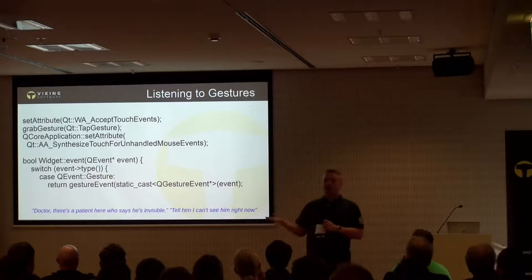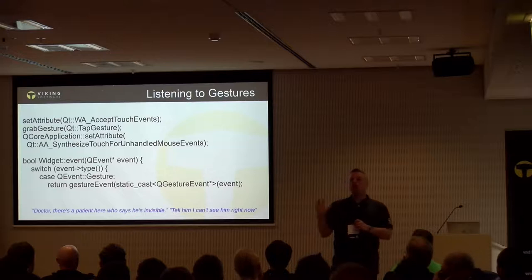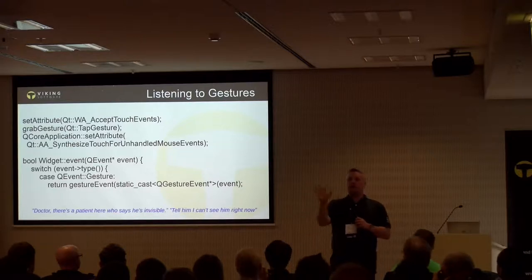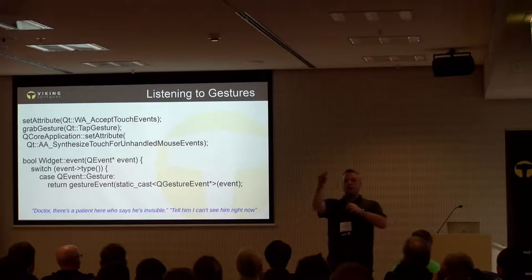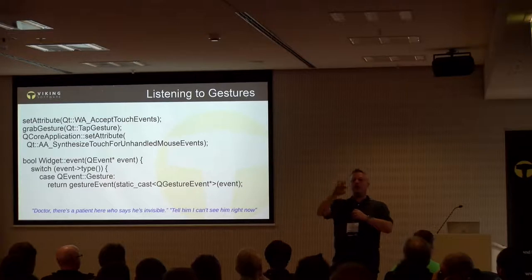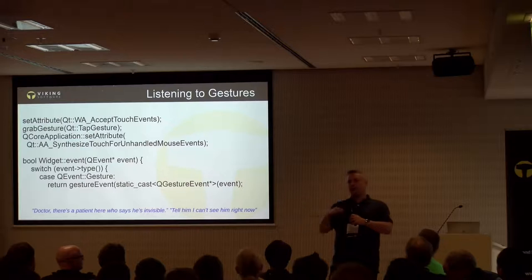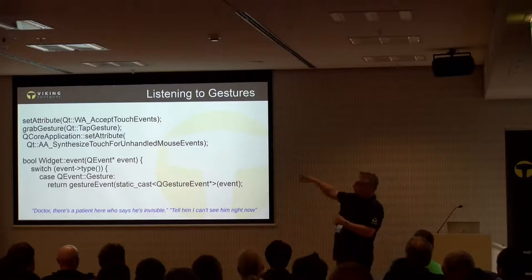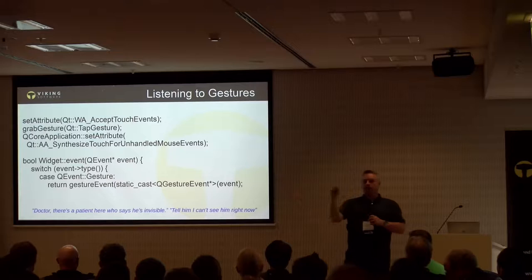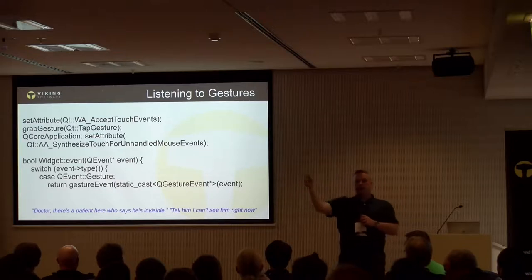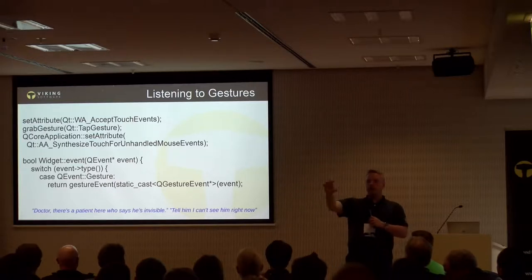If you don't tell Qt you want touch events, it will act as if a widget doesn't exist for touch purposes. Your touch goes directly through to the widget behind it. You then say 'grab gesture — tap gesture' and now that widget handles tap clicks. There's also a flag — probably the longest flag name in Qt — that says if a mouse event goes nowhere, synthesize it as a touch event. This lets you use your mouse on a laptop to control touch functionality, which is useful for testing and development.